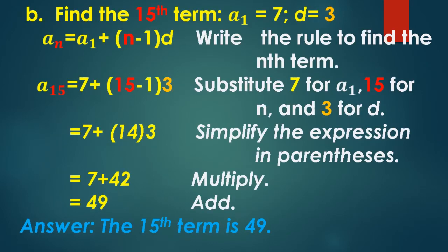Letter B, find the 15th term. A sub 1 is equal to 7, and the common difference D is equal to 3. We are going to write the rule to find the nth term. The rule is: A sub n is equal to A sub 1 plus open parenthesis n minus 1 close parenthesis times d, the common difference.